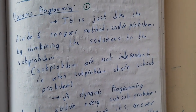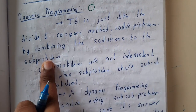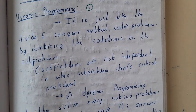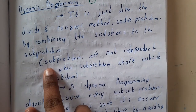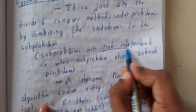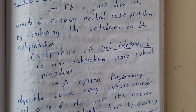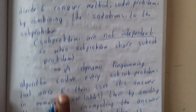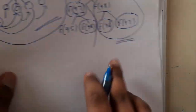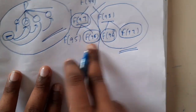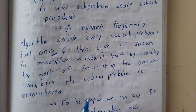In theory, dynamic programming is just like divide and conquer — solving a problem by combining solutions of subproblems — but with the key addition of storing results. Subproblems are not independent; they share overlapping parts. A dynamic programming algorithm solves every subproblem just once and saves its answer, avoiding recomputation. With a normal algorithm, there is no storage and computations repeat blindly.